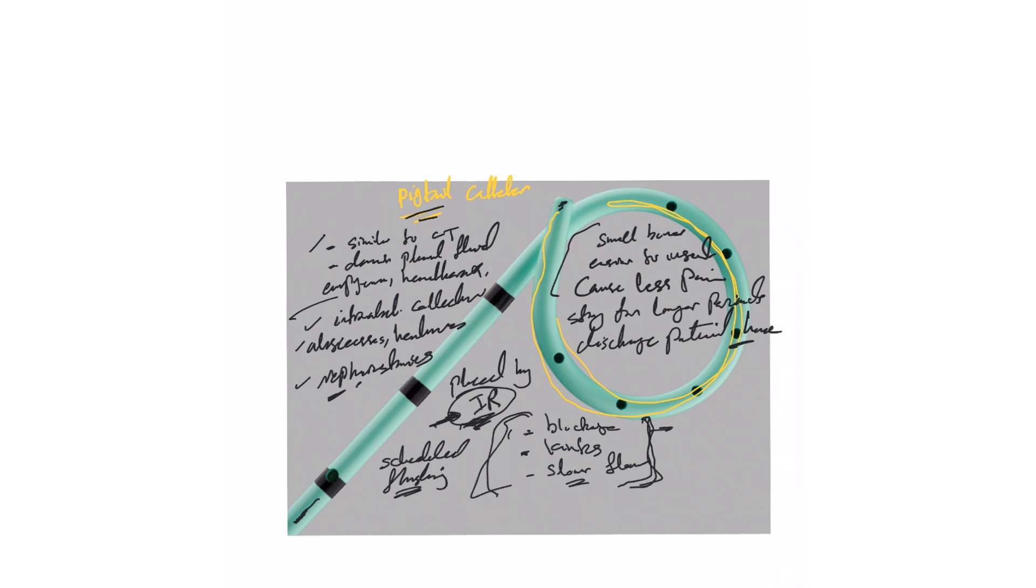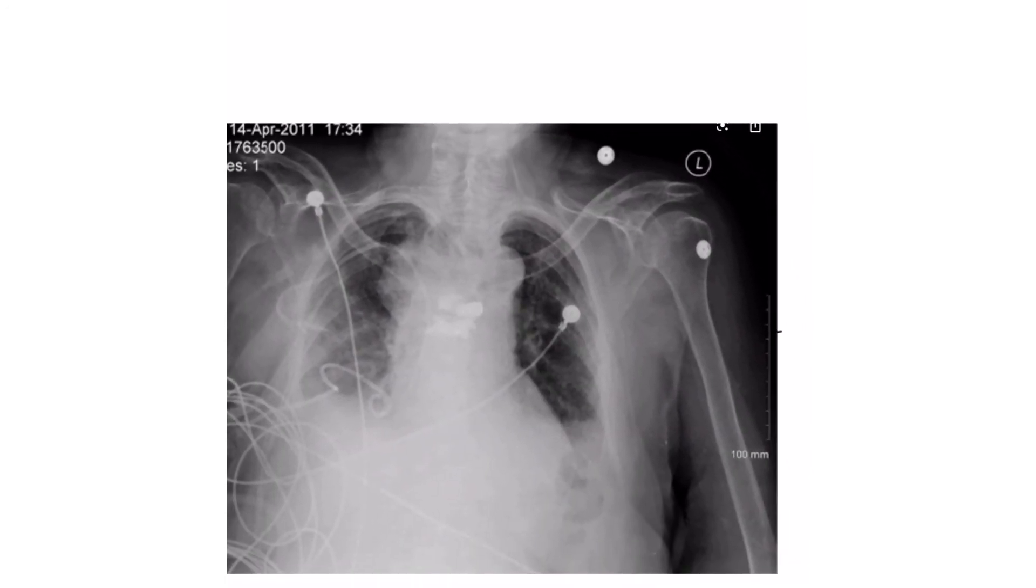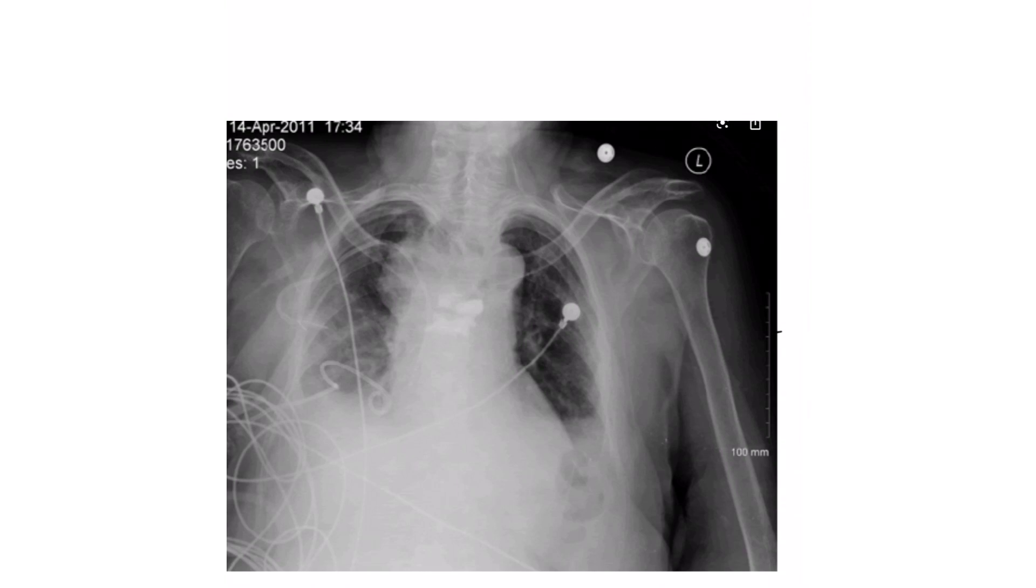So that's really important to remember. The last thing I want to show you is an x-ray. So whenever you see this, see this curly curling tube at the tip, this is a pigtail as we just showed the picture. Whenever you see this, I mean this is a pigtail catheter. This is placed for pleural fluid drainage.